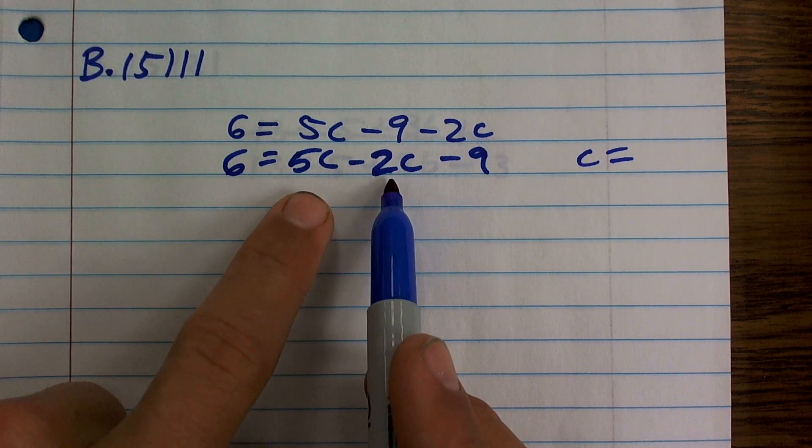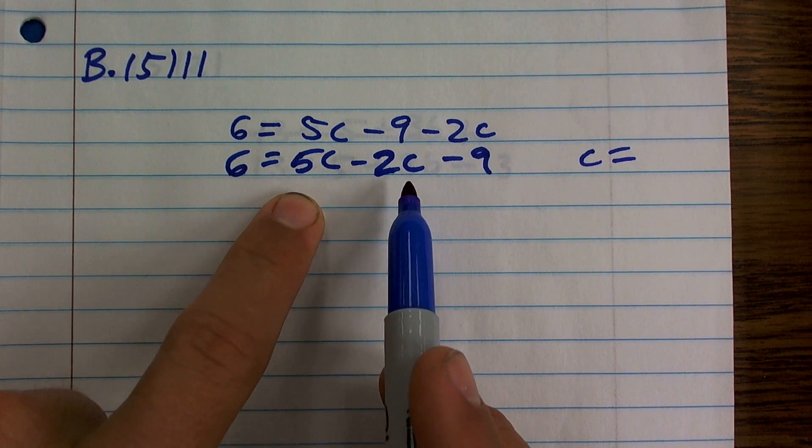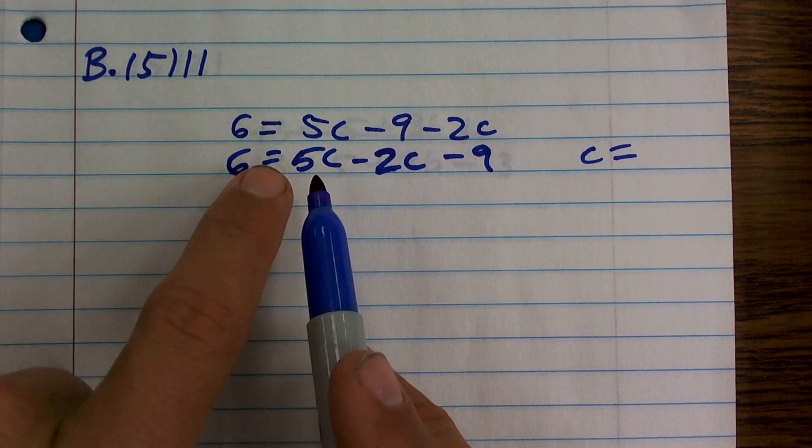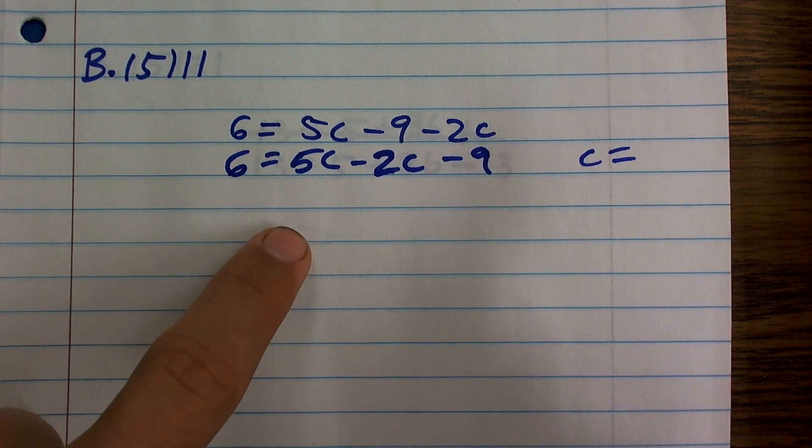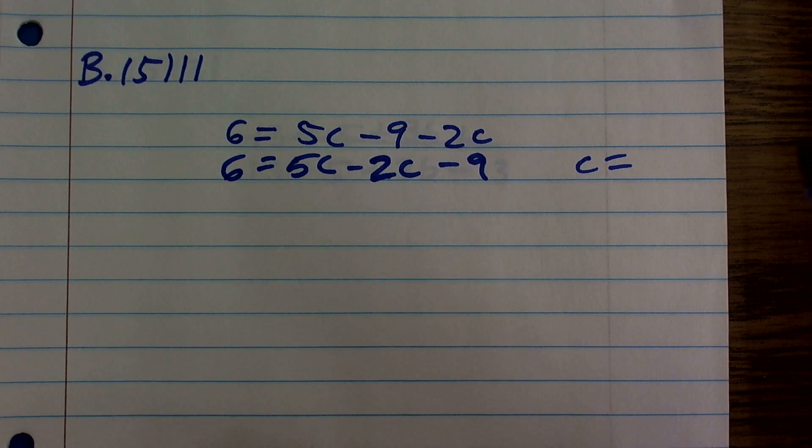Now I can actually combine like terms. Since these have the same factors, I can now combine them. So 5c minus 2c is going to be 3c. A big mistake is what students would say it's 3 or it's just 3 or it's just c.